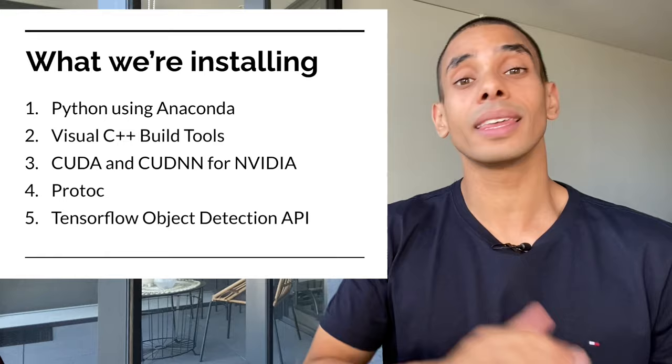What's happening guys, my name is Nicholas Dranott and in this video we're going to be taking a look at how we can easily install the TensorFlow Object Detection API. This can be a little bit tricky if you're installing it for the first time — you could get lost, install the wrong versions, and go down a rabbit hole. We're going to clarify all of that today and run through this in five key steps.